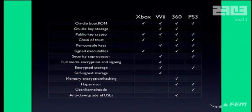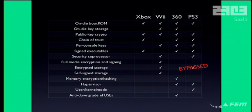So those are the features of the consoles. There's one on the PS3 that's already kind of useless, because it turns out the PS3 encrypts stuff with a key that's the same for every sector and the same IV, and doesn't hash anything.